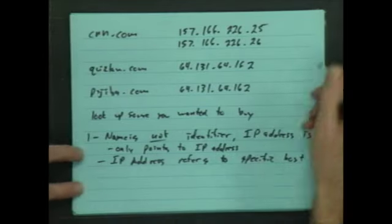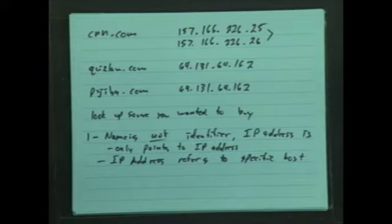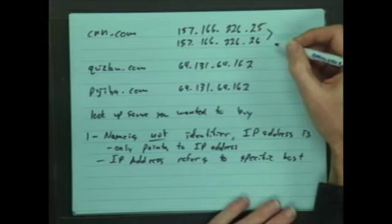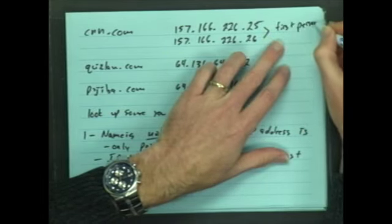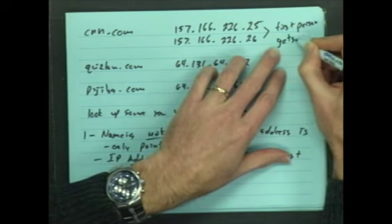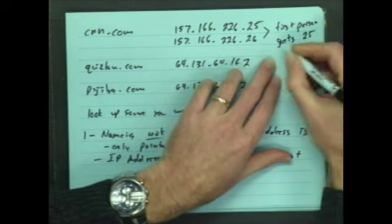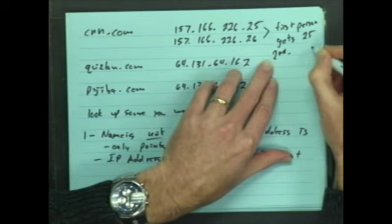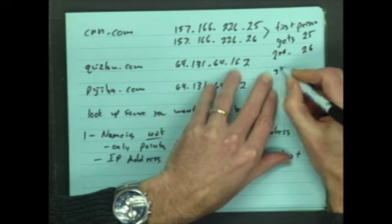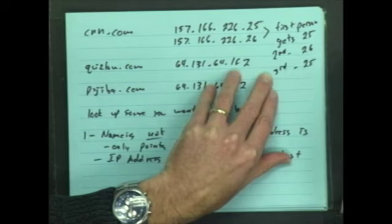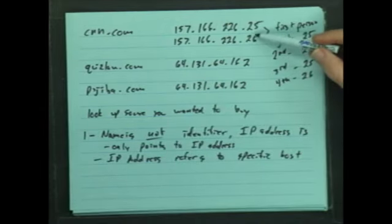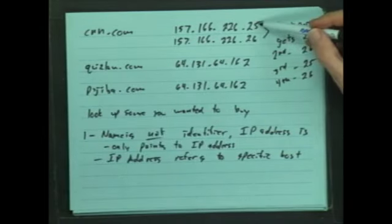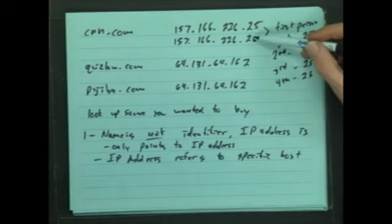So here's lesson number two. If we have two IP addresses, it becomes basically a line. So the first person that requests, they will get the .25. Second is going to get .26. The third person will get .25 again. The fourth person is going to get .26. So we can see this becomes basically a line, and as people come in, or as people request this name, one will get this, another will get this.